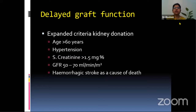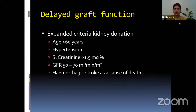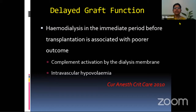Nowadays, to increase the donor pool, extended criteria kidney donors are accepted — for example, if the donor age is more than 60 years, if there is hypertension, if serum creatinine is more than 1.5 mg percent, if the patient has low GFR, or if hemorrhagic stroke is the cause of death. Taking a suboptimal graft from a cadaver can also lead to delayed graft function. It has also been seen that hemodialysis in the immediate period before transplantation is associated with poor outcomes, because of complement activation by the dialysis membrane and intravascular hypovolemia.